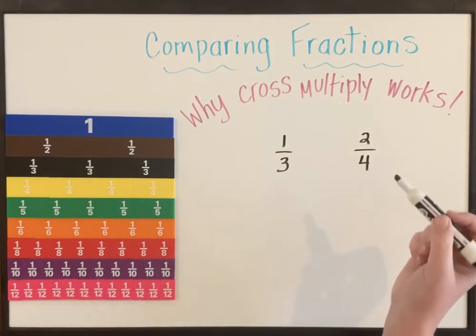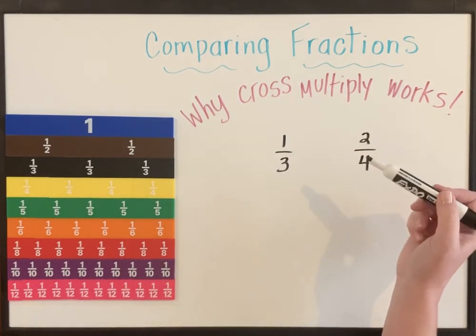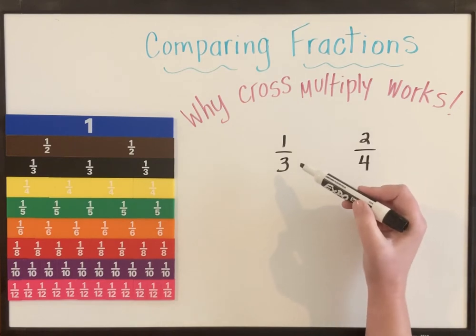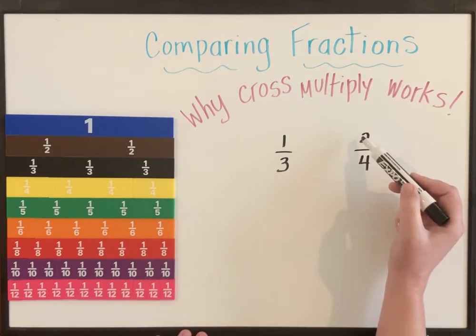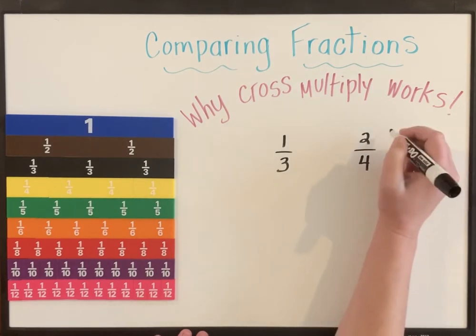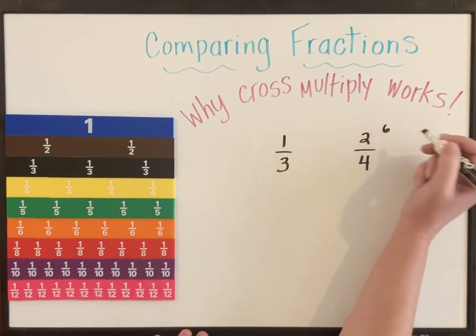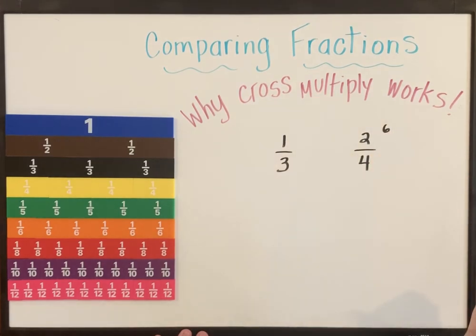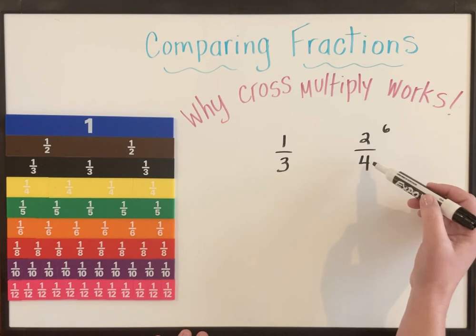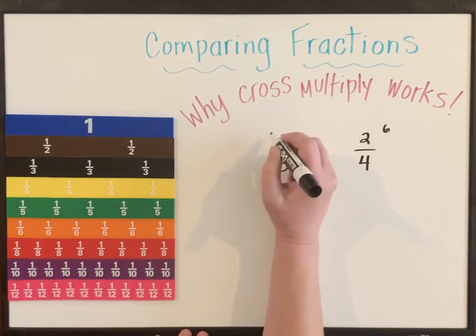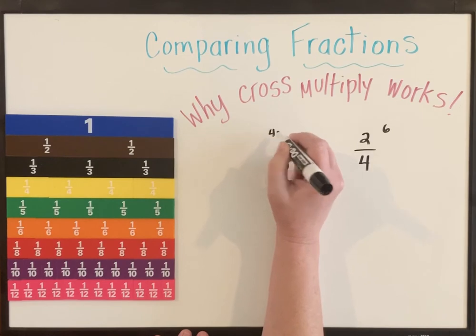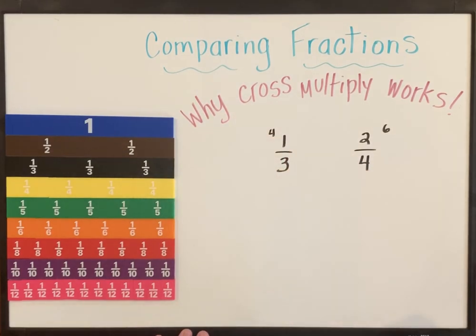So I know that I could compare using cross multiplication, and to do that we multiply our denominator by our cross numerator. Three times two. Three times two is six. I'm going to put a little six up here in that corner.